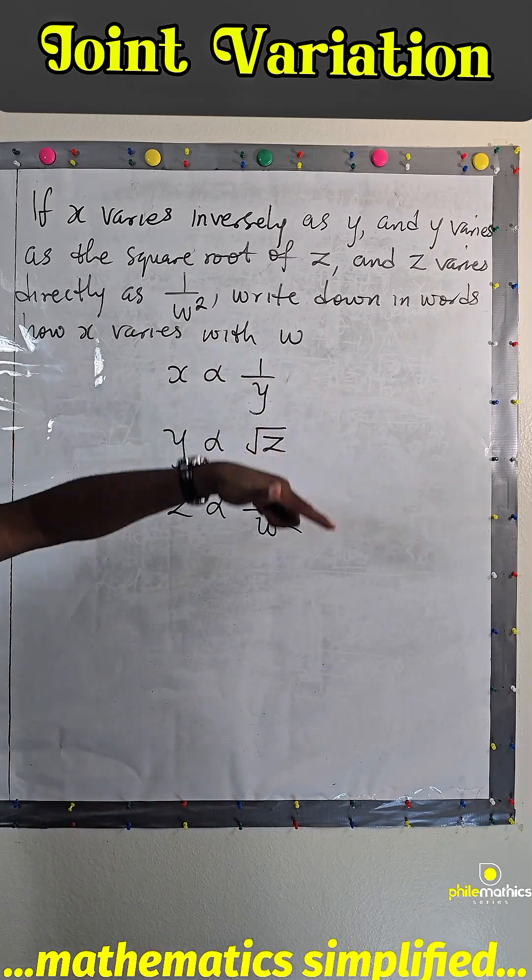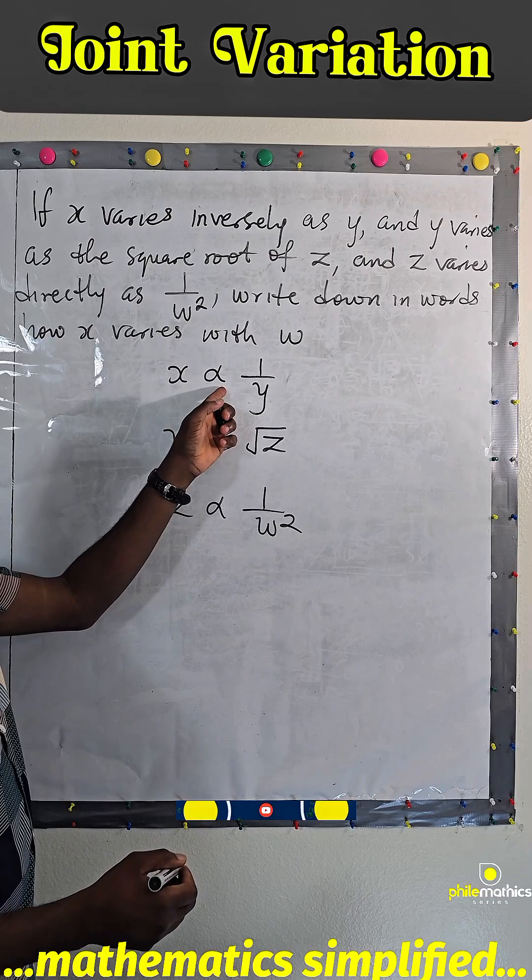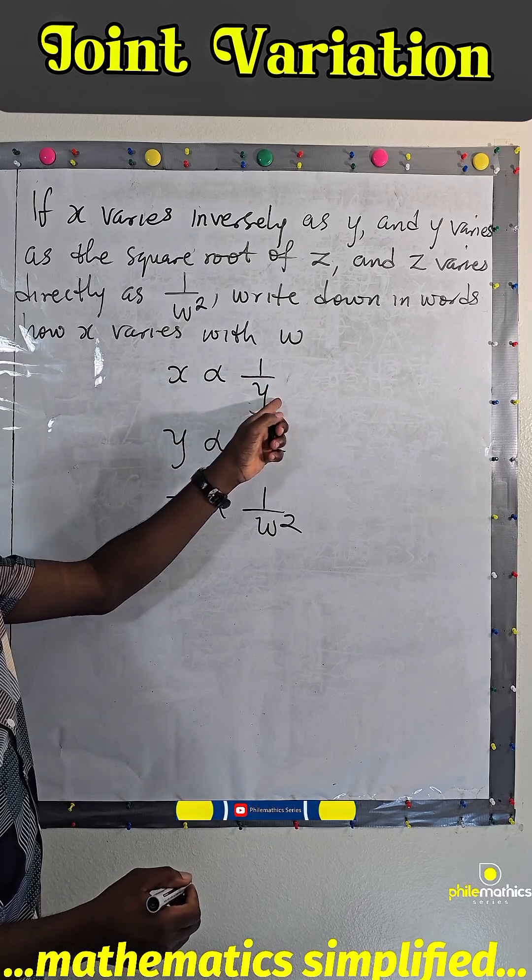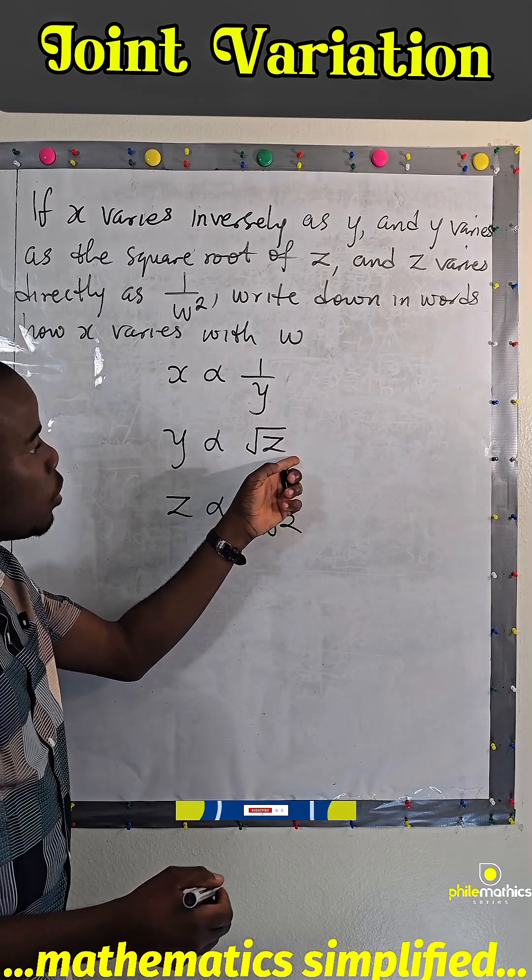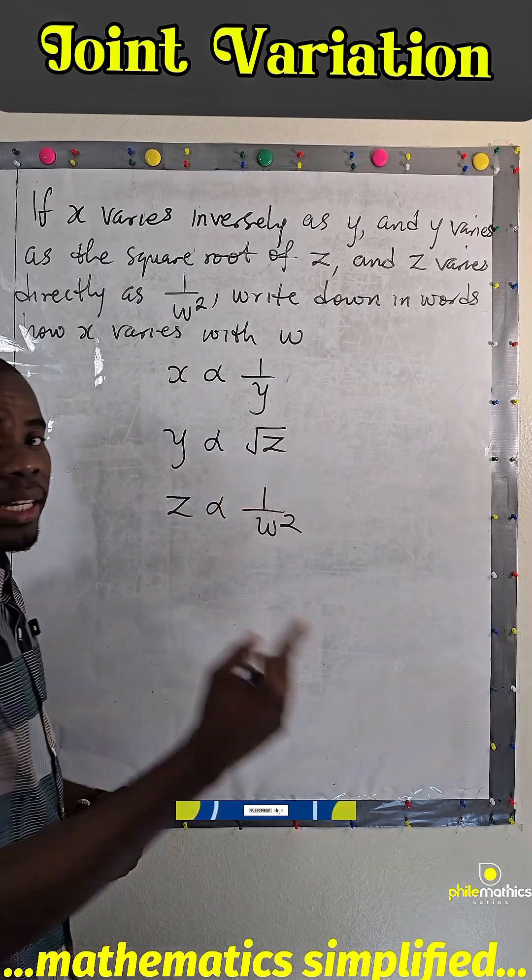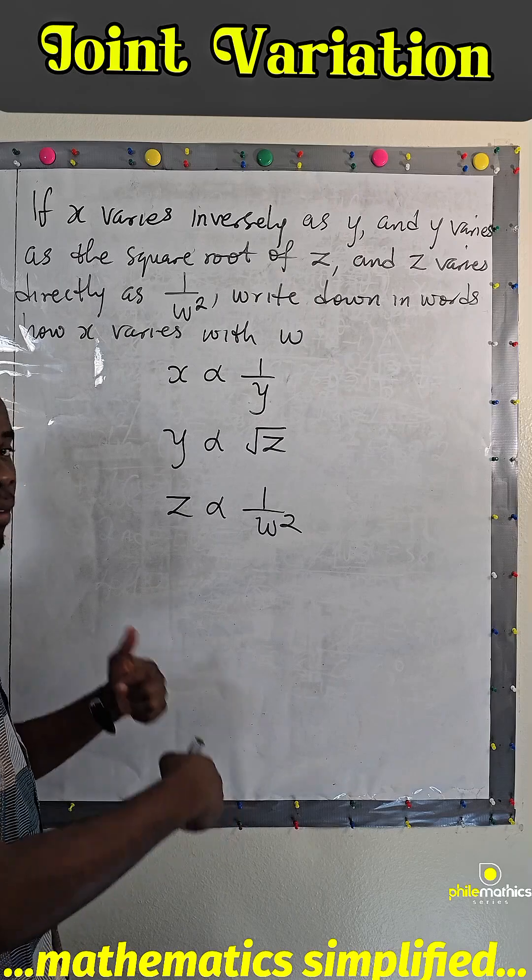Write down in words how x varies with w. X varies inversely as 1 over y. Y varies directly as square root of z, which means if y is increasing, root z is increasing, and vice versa.